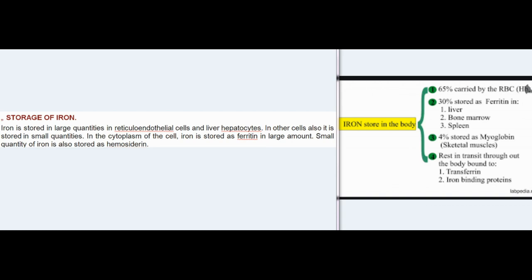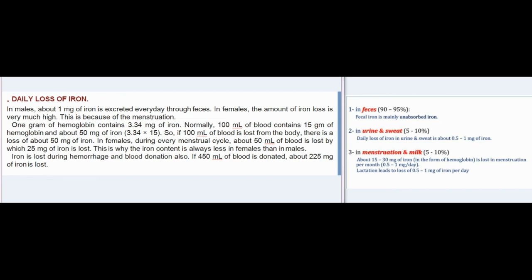Iron is stored as ferritin in large amounts; a small quantity is also stored as hemosiderin. Daily loss of iron: in males, about 1 mg of iron is excreted every day through feces. In females the amount of iron loss is much higher because of menstruation. One gram of hemoglobin contains 3.34 mg of iron; normally 100 mL of blood contains 15 g of hemoglobin and about 50 mg of iron. So if 100 mL of blood is lost, about 50 mg of iron is lost.